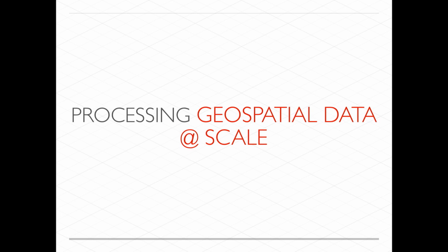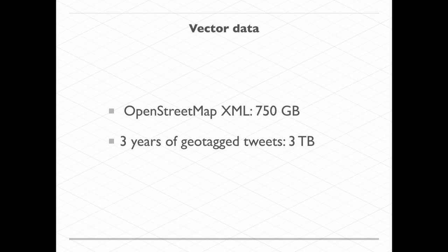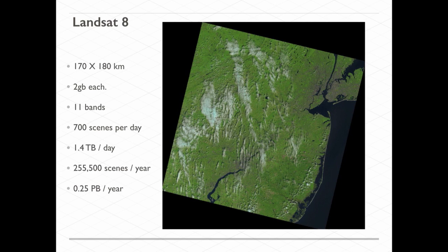So that's processing geospatial data. Now what about at scale? Vector data gets pretty big. That OpenStreetMap XML for the whole world is about 750 gigs. Mapbox did a blog post a while ago about three years of geotech tweets — it was three terabytes. Raster data gets really big, especially satellite imagery.